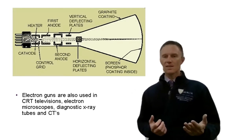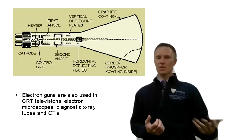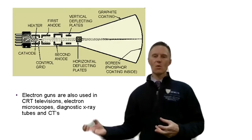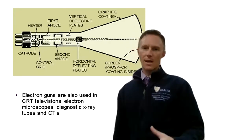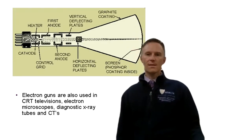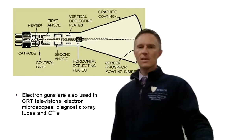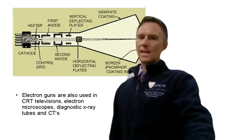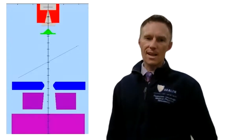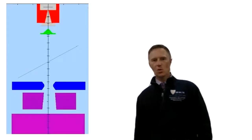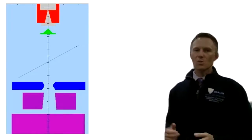A standard old-fashioned light bulb would also produce electrons, but the electrons are not able to be drawn away from the surface because there's no electric field. This is the same principle used in a diagnostic x-ray tube — the acceleration part is just nowhere near as complicated in the diagnostic tube.